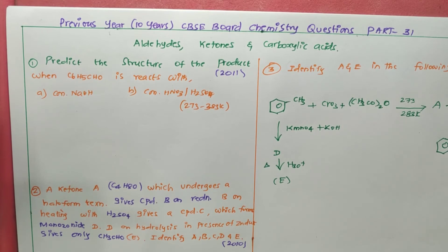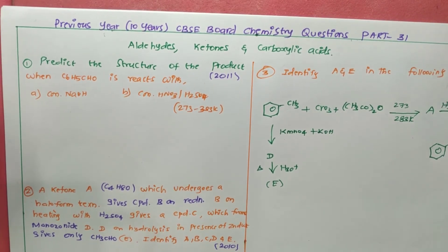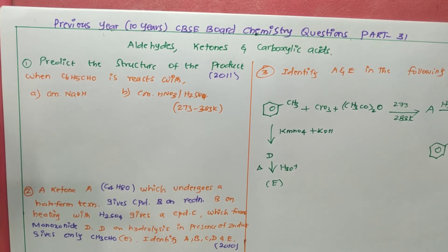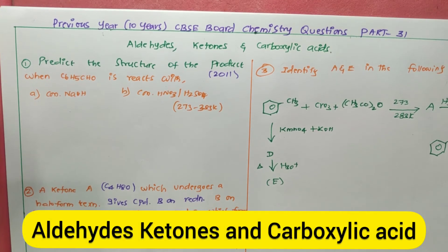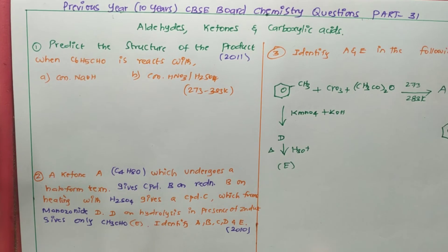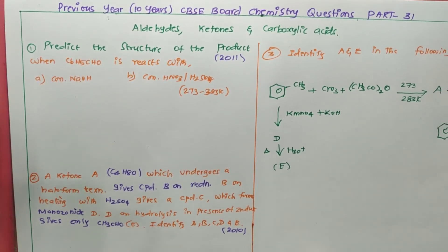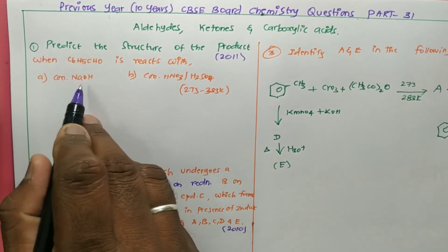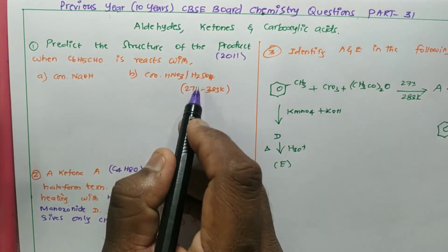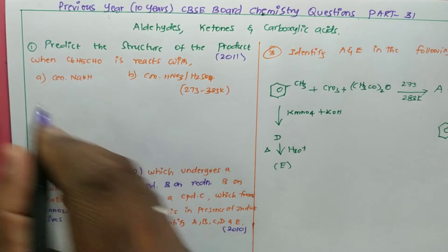Welcome to our channel, my dear students. Today we are going to talk about the previous year, that is last 10 years CBSE Board Chemistry questions Part 31, in which we are going to discuss about the Aldehydes, Ketones, and Carboxylic Acid chapter. Question number one is: predict the structure of the product when benzaldehyde reacts with con NaOH and con HNO3/H2SO4. This question was asked in the year 2011.